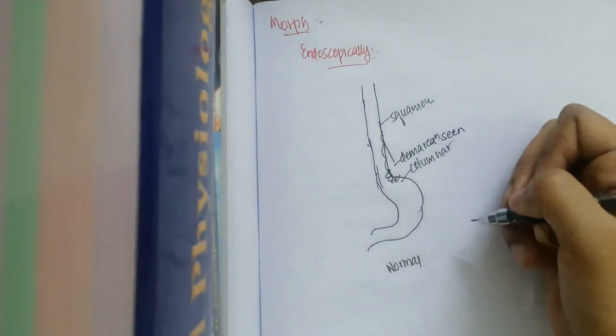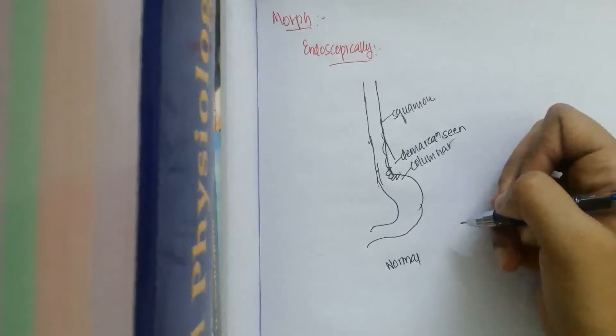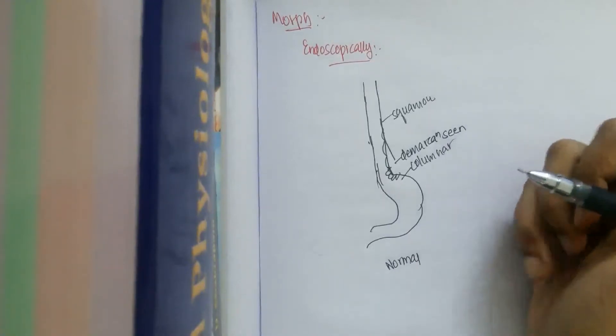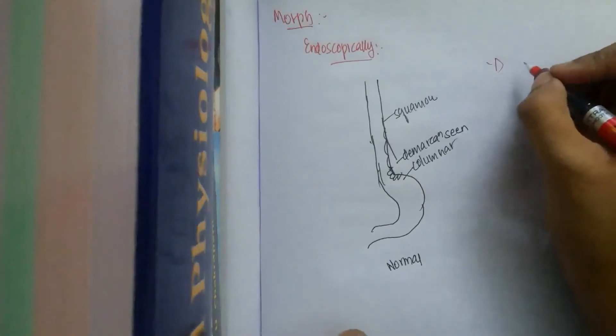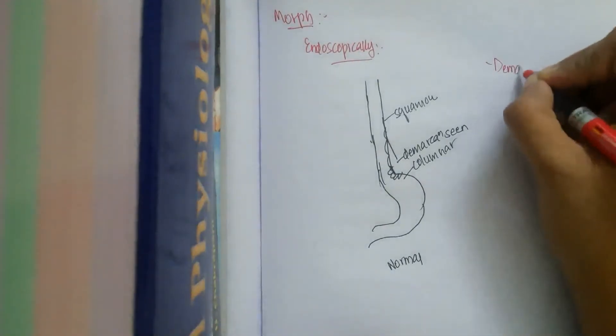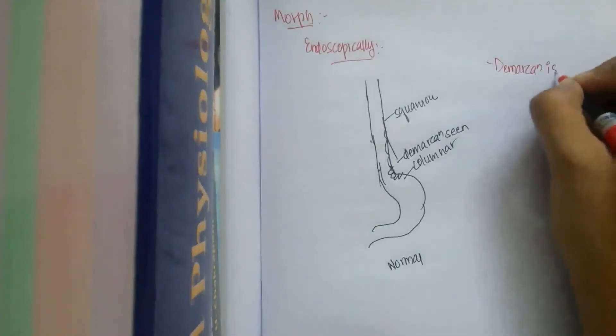But here, there is loss of demarcation. You can't differentiate between the squamous and the columnar epithelium. So here in reflux esophagitis, demarcation is lost.